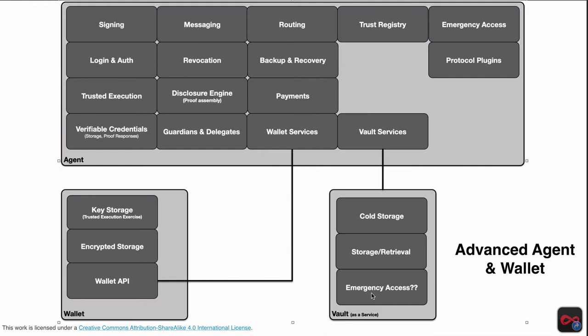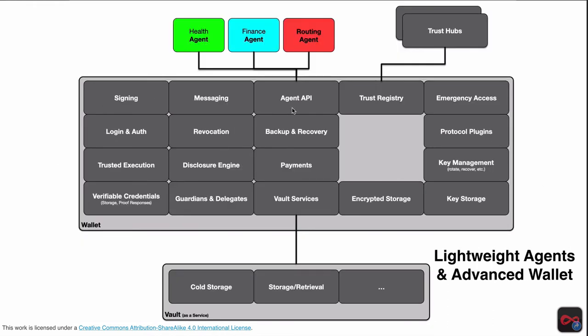Next I want to jump to a more lightweight approach, where the wallet has some of these capabilities but we really look to agents to handle a lot of things. We might have something like a routing agent whose only job is to find the other agents on my domain network — just to say 'Daryl's phone is over here, his iPad is over here.' So the wallet basically takes on a lot of the agent capabilities we normally talk about, and the agents become a lot more lightweight.